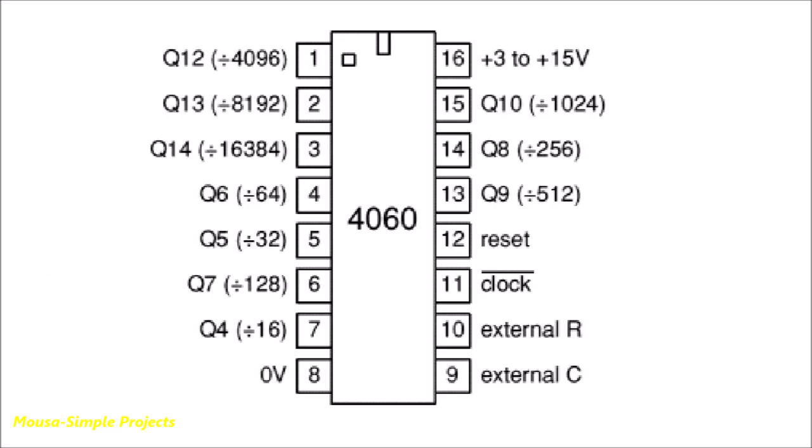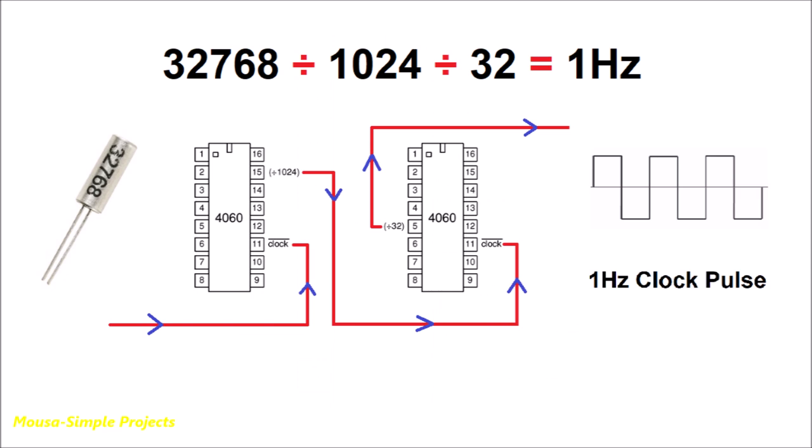You can use IC 4060 to do that, but you have to use two of them because it cannot divide by 32,000 in one step. The first IC divides the frequency by 1024, and the second one divides it by 32.